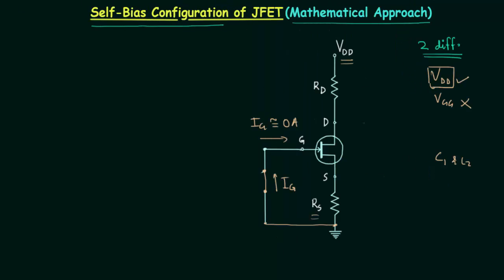Our prime aim is to find the operating point, the Q point. The Y-coordinate of the Q point is the drain current ID, and the X-coordinate is the gate-to-source voltage VGS. We write Q to represent these coordinates of the operating point.